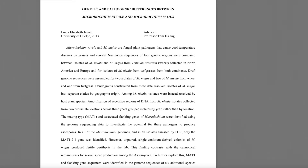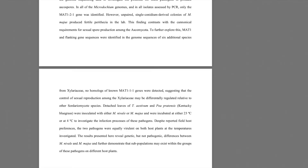In all of the Microdochium genomes and in isolates assessed by PCR, only the MAT1-2-1 gene was identified. However, unpaired, single-conidium-derived colonies of M. majus produced fertile perithecia in the lab. This finding contrasts with the canonical requirements for sexual spore production among the Ascomycota. To further explore this, MAT1 and flanking gene sequences were identified in the genome sequences of six additional species from Xylariales. No homologues of known MAT1-1-1 genes were detected, suggesting that the control of sexual reproduction among Xylariales may be differentially regulated relative to other Sordariomycete species.